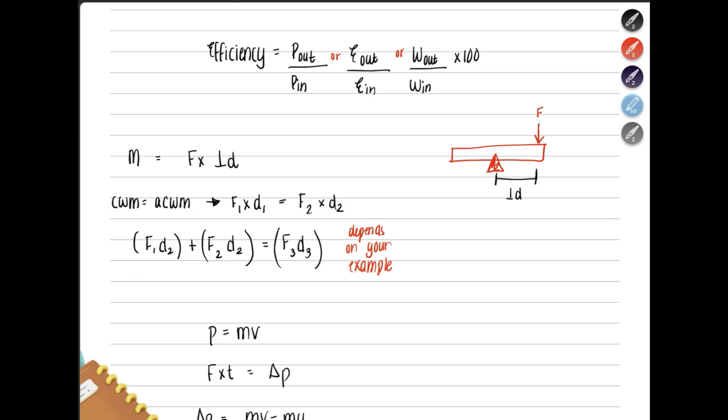Sometimes, you can even have multiple moments on one side. For example, here, you have one moment plus another moment equal to the other moment. So it would be f1 times d1 plus f2 times d2 equals f3 times d3. On the other side, anticlockwise moment, it has f3 and d3. That means the f3 is on the other side. So it basically depends on your example. You have to see which forces are acting in which direction.